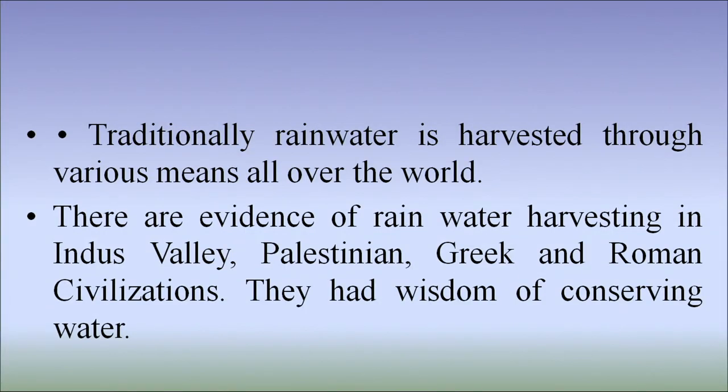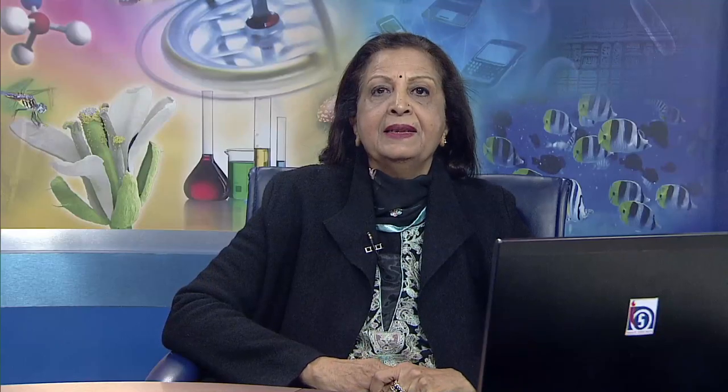Traditionally, rainwater is harvested through various means all over the world. The evidences of rainwater harvesting in Indus Valley, Palestinian, Greek and Roman civilizations show their wisdom of conserving water. Rainwater harvesting is gaining significant importance in recent times due to severe scarcity being faced in many parts of the world including India. Several initiatives are taken by the government of India and various state governments to promote rainwater harvesting, and many local bodies are considering making it mandatory to install rainwater harvesting systems in housing complexes, large buildings and offices.